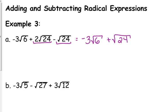Now, right now, we cannot add something that has the square root of 6 to something that's the square root of 24. However, we can simplify the square root of 24, can we not? Yeah. That is 2 square roots of 6.